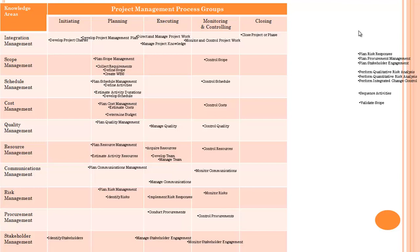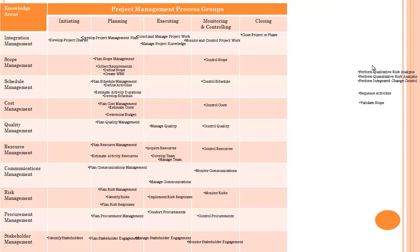Plan risk management comes under planning process group and risk management knowledge area. Plan procurement management comes under planning and procurement knowledge area. Plan stakeholder engagement comes under planning process group and stakeholder management knowledge area.